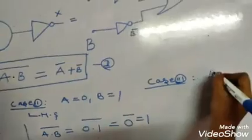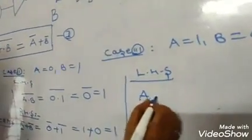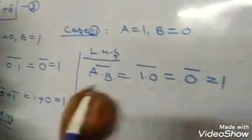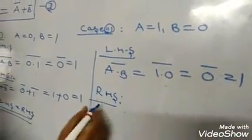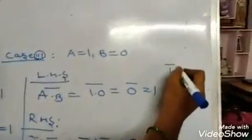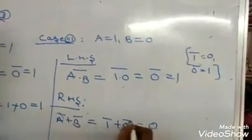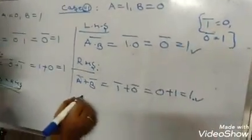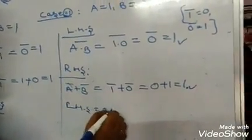Case 3: A equals 1, B equals 0. LHS: A dot B all bar = 1 into 0 = 0, and 0 bar equals 1. RHS: A bar plus B bar = 1 bar plus 0 bar = 0 plus 1 = 1. Hence proved, LHS equals RHS.